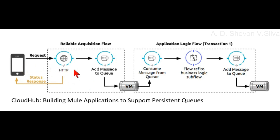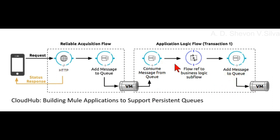The application logic flow delivers the message from the inbound VM endpoint to the business logic processing in your application. This flow represents one transaction. Your business logic may involve several other transactions.